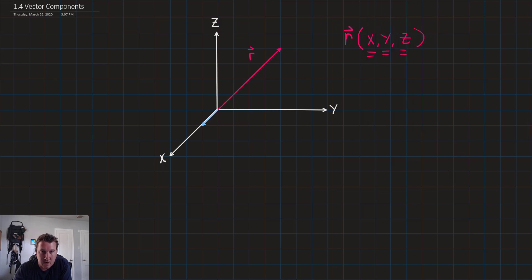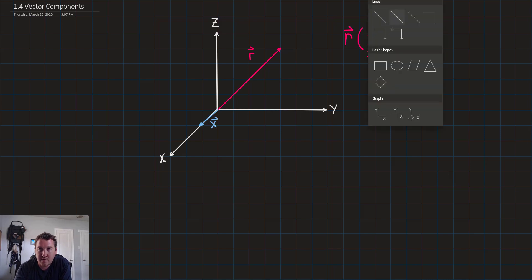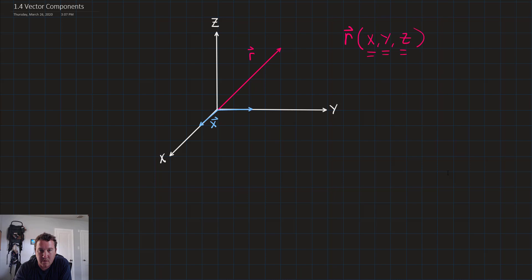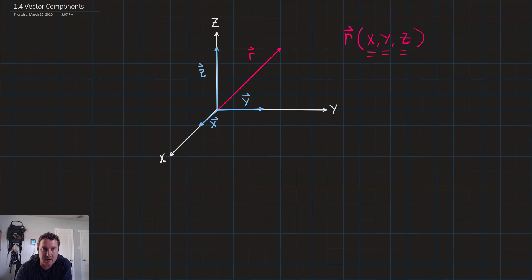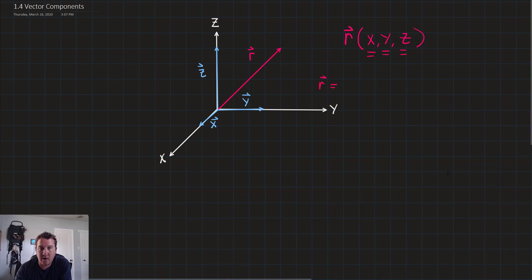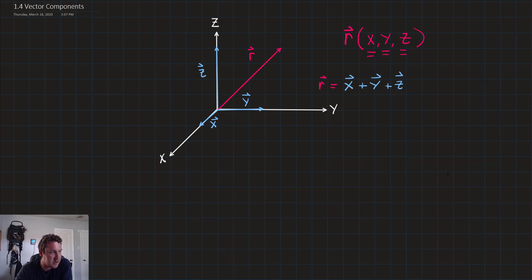If we have a vector coming out of the origin, let's call that vector x. Then a vector coming from the origin along the y axis, we'll call that vector y. And a vector coming up out of the z axis, call that vector z. We can say that the vector r is equal to the sum of these vector components: vector x plus vector y plus vector z.